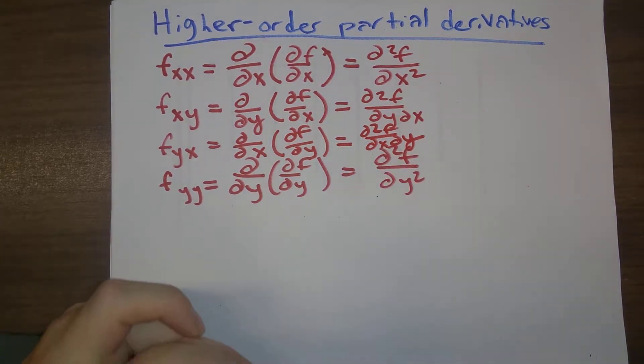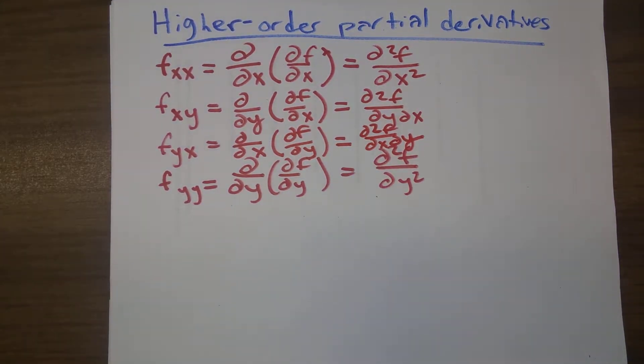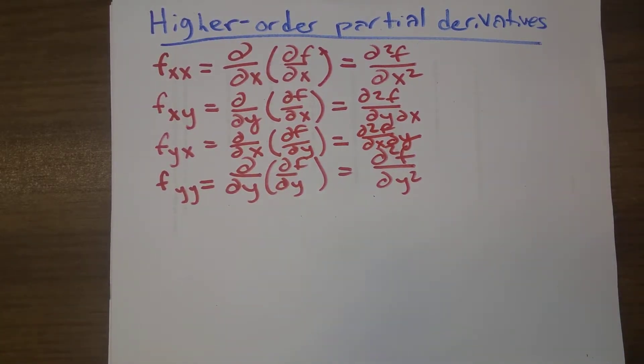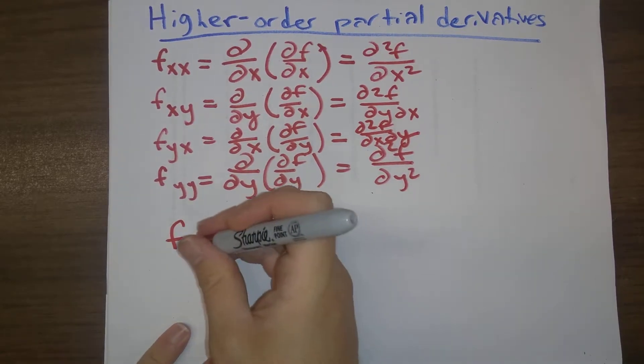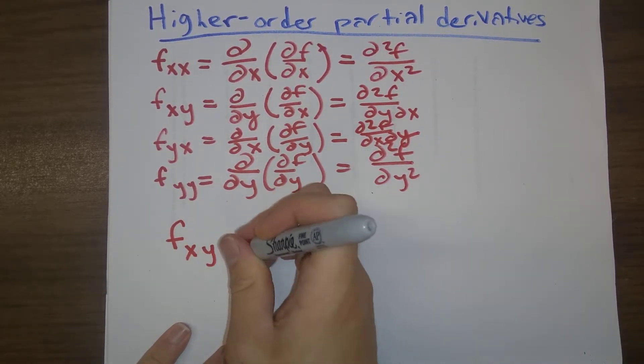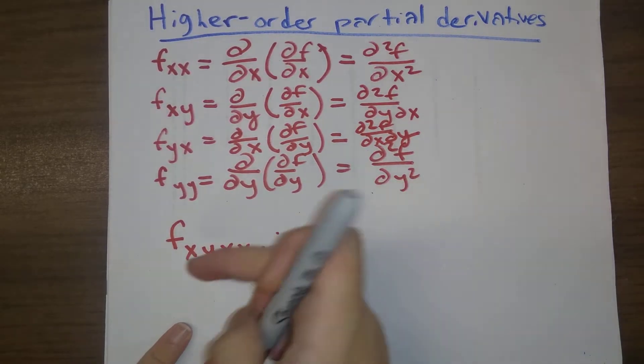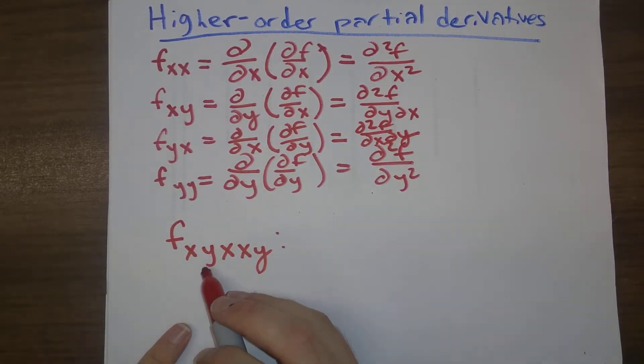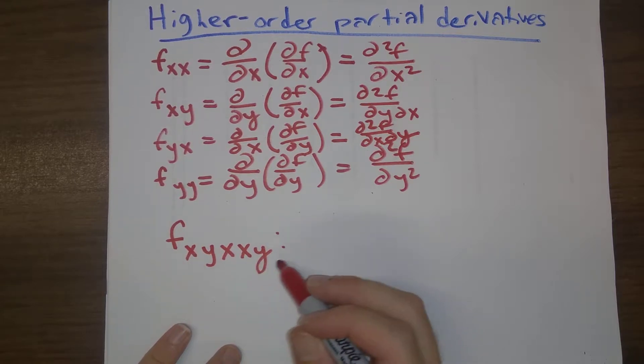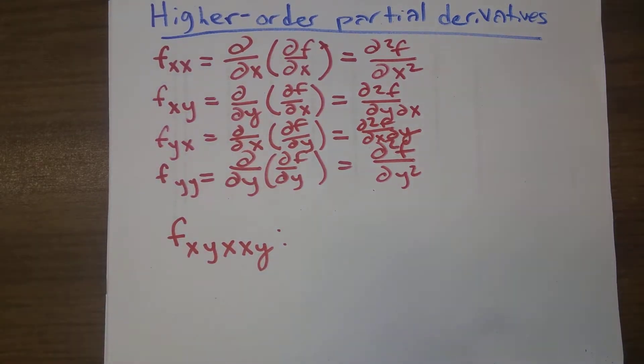So here we have these four possibilities for our higher-order partial derivatives. These would just be the second-order partial derivatives. We could also have something like f_x_y_x_x_y, where you can make up just how crazy of a higher-order derivative that you want.